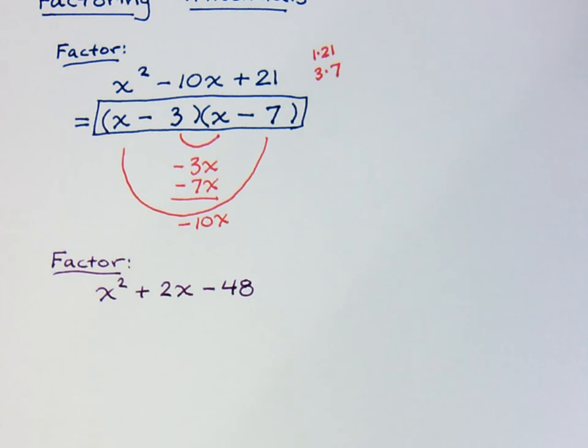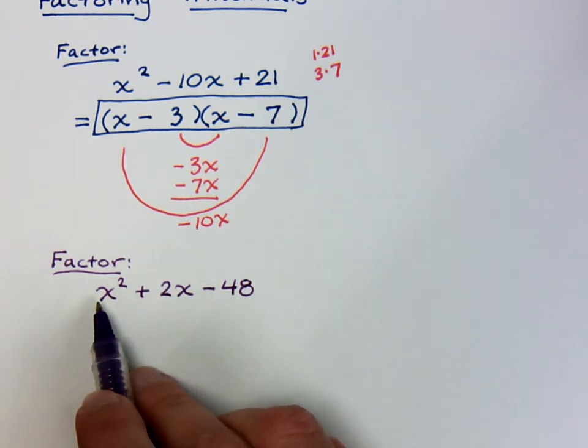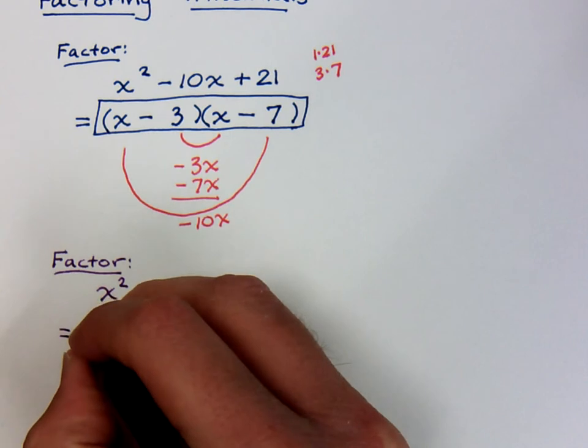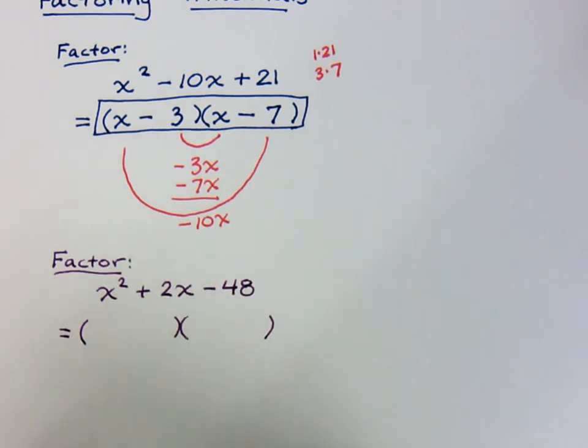X² + 2X - 48. Is there a common factor for everything? No. You may think there is, because these guys are both even. But you can't take anything out of this guy. So it's a trinomial. We expect it to factor as the product of two binomials.